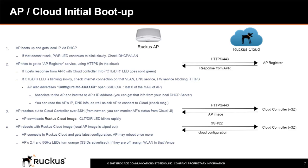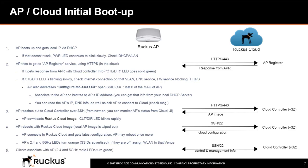The AP's 2.4 and 5 GHz LEDs will turn orange, indicating that the SSIDs are being advertised. If they are off, you will need to assign a wireless LAN to the venue where the AP has been configured. When a client associates to the 2.4 or 5 GHz radio, the respective LEDs will turn green.